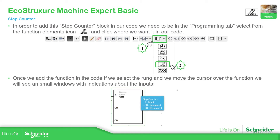So how can we add this step counter to see how it works? Simply go to the function blocks list, select this one, and you can see the steps, then add it into our software. You can see there is no physical output - only inputs on the left part: reset, count up, count down.